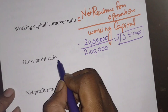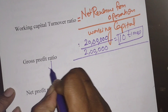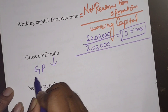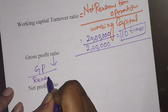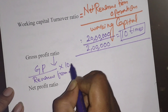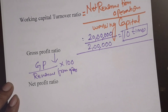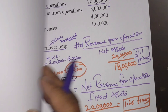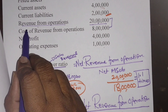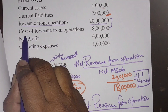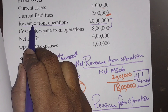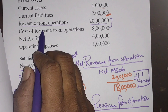Next, coming to gross profit ratio. The formula is: gross profit divided by revenue from operations, multiplied by 100. Gross profit is not given directly, so we calculate it: revenue from operations minus cost of revenue. When we subtract cost from revenue (i.e., sales), we get gross profit.